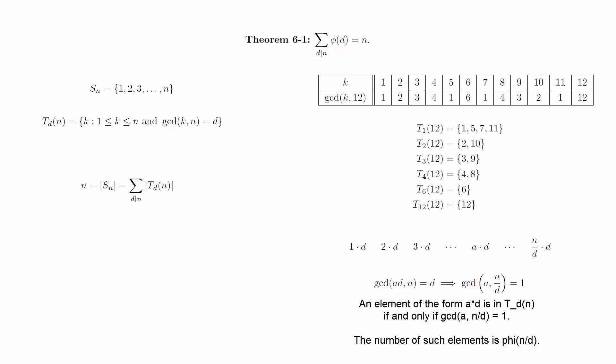This means that an element of the form ad is in T sub d of n if and only if the GCD of a and n over d is 1, which is the exact same condition used in the Euler-phi function. Therefore, we can say that the size of the set T sub d of n is equal to phi of n over d.